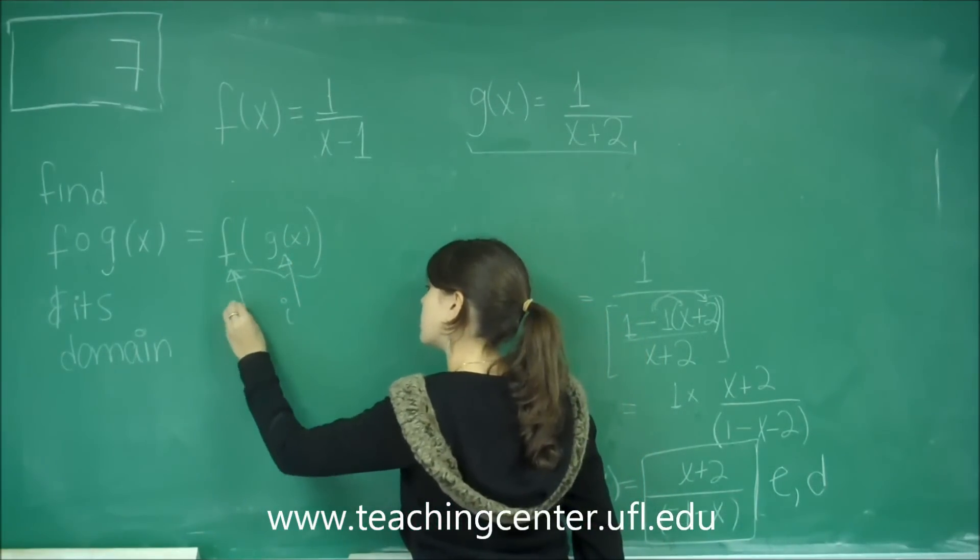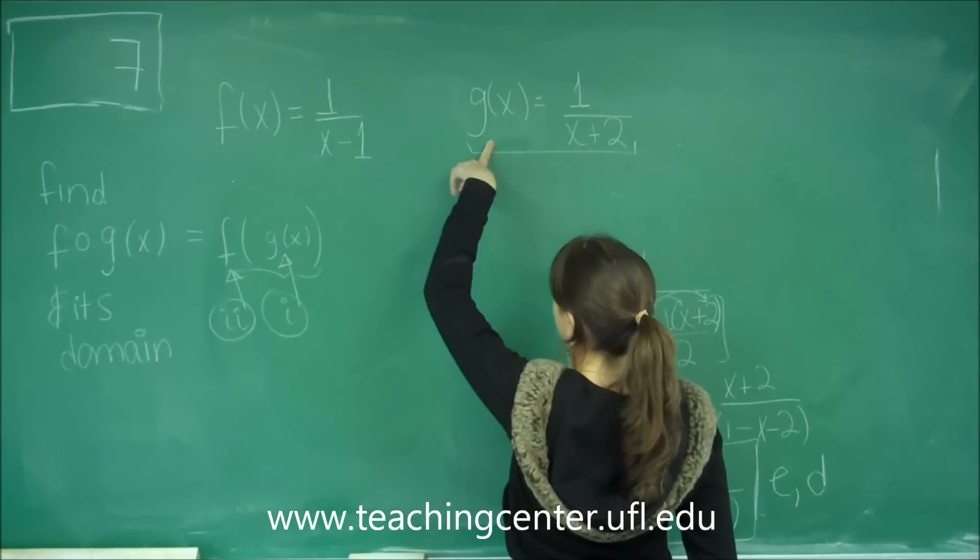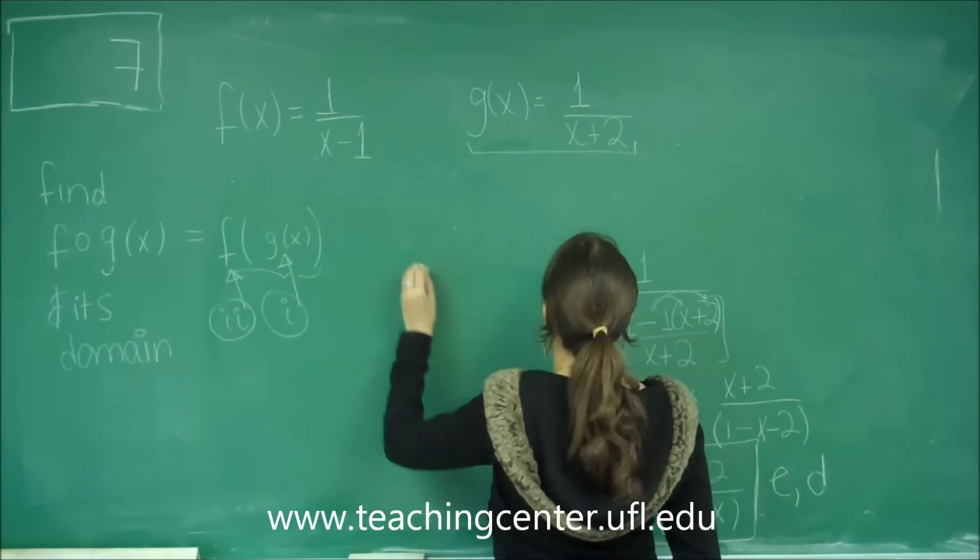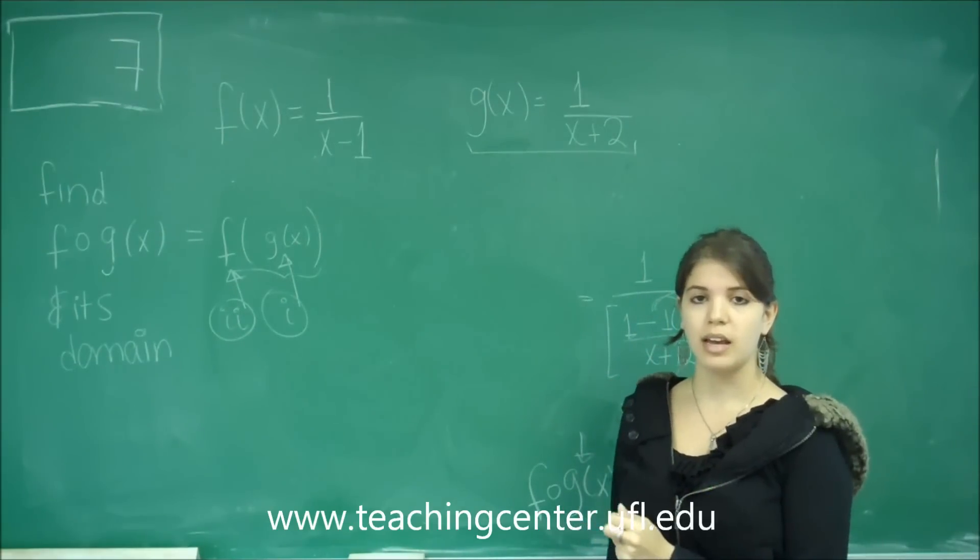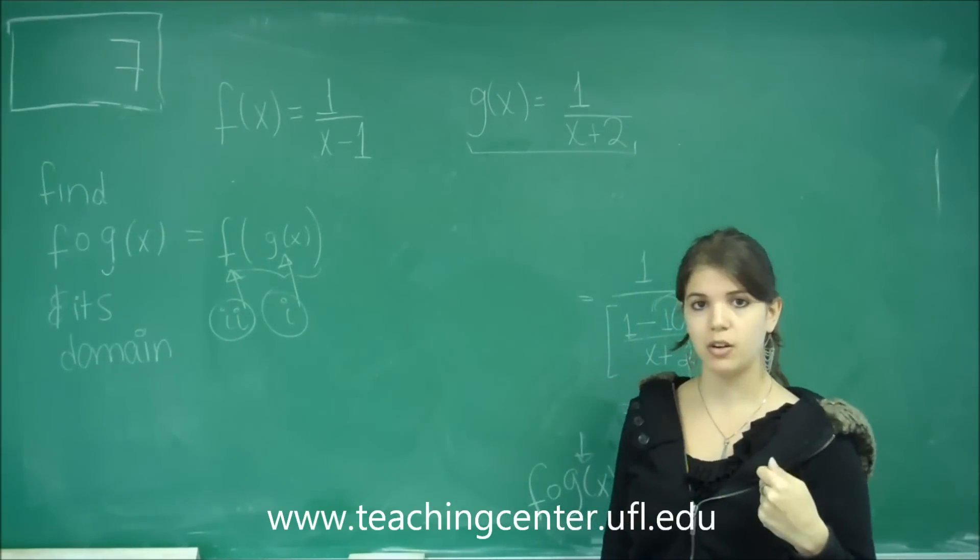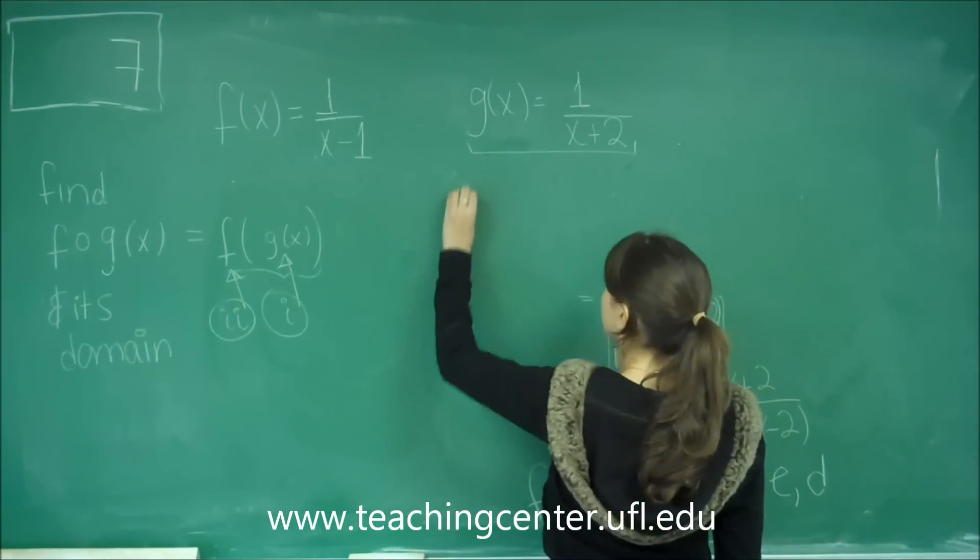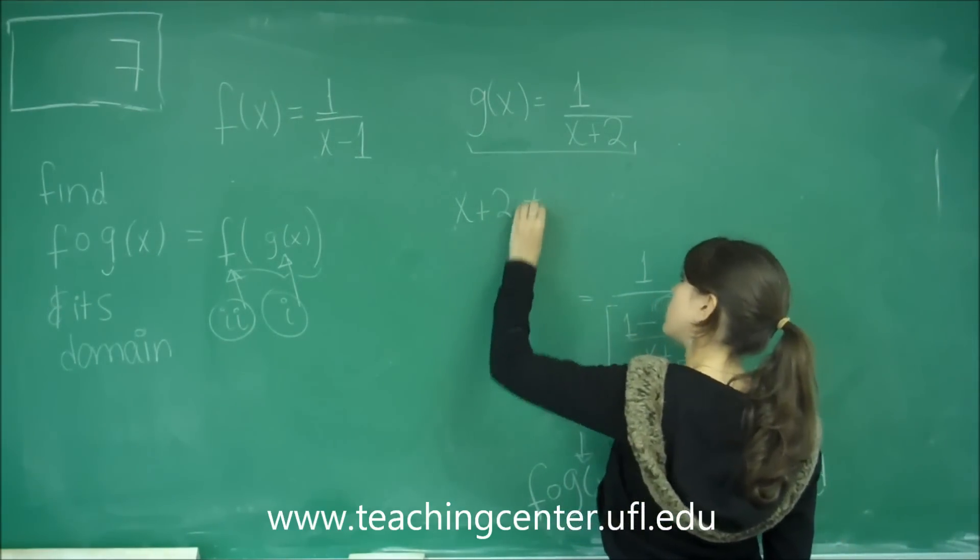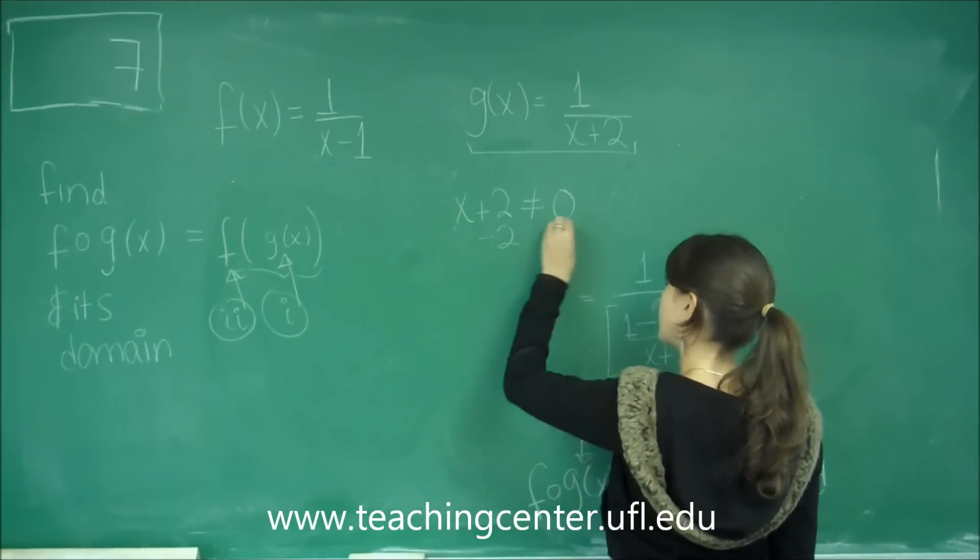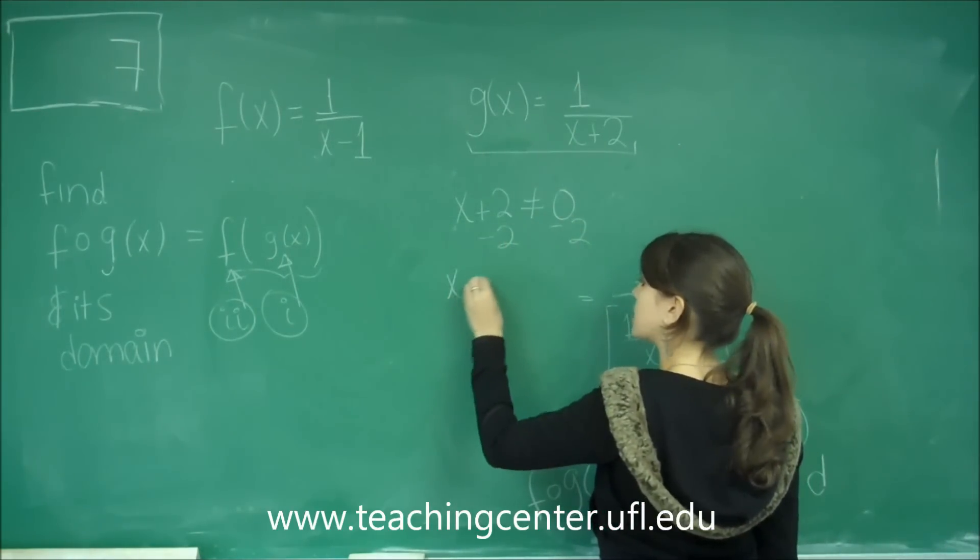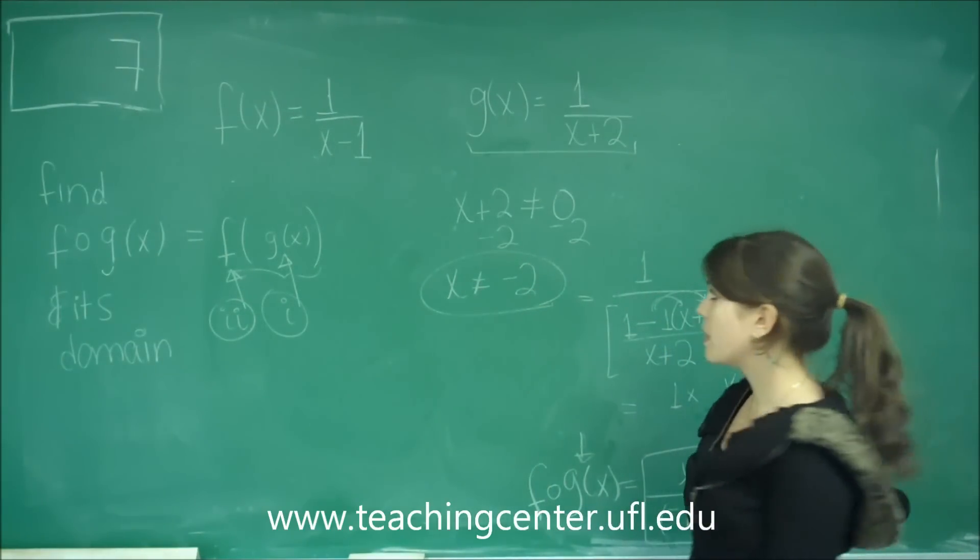The first domain is the domain of g of x. To find the domain of g of x, it's every number except when the denominator equals zero. So it's x plus 2 not equal to zero. If we subtract 2 on both sides we get that x can never be equal to negative 2. So that's the first part of the domain.